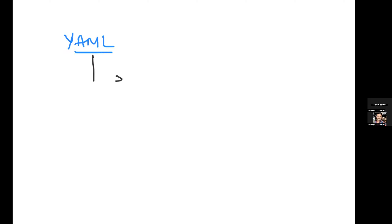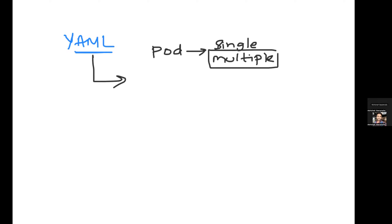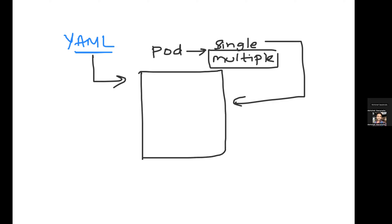In Kubernetes, instead of a container, you deploy a pod. A pod can be a single container or it can be multiple containers. For now, just go with a single container. When you have one single container, a pod is exactly like a Docker container — the only difference is that instead of using the docker run command with all its arguments, you put everything in a YAML file. Inside that YAML file, you specify something like: apiVersion: v1, then provide the pod name and its specification.